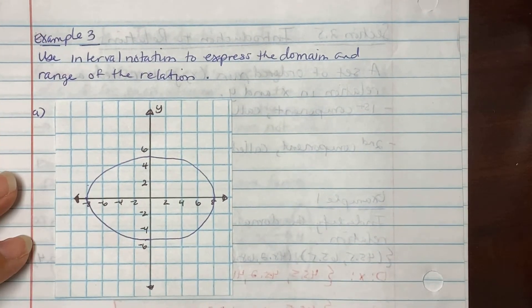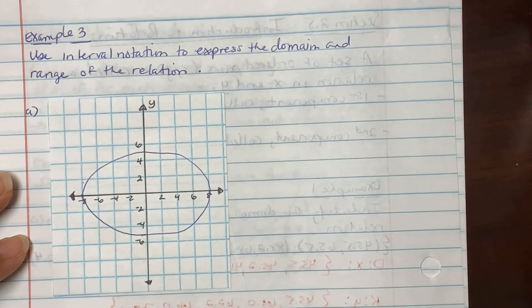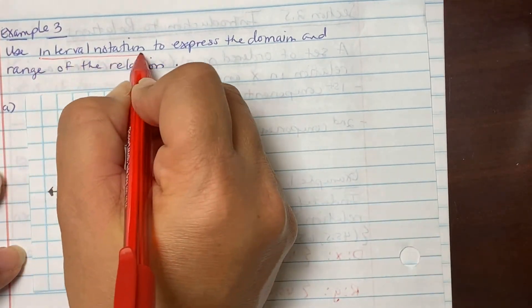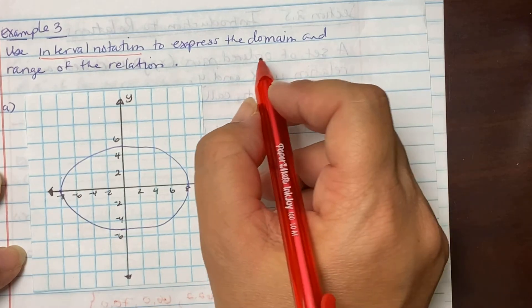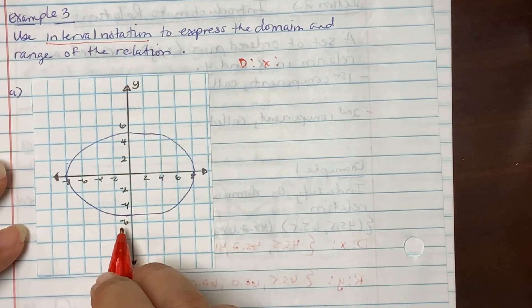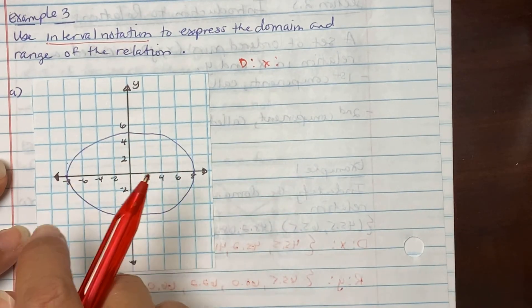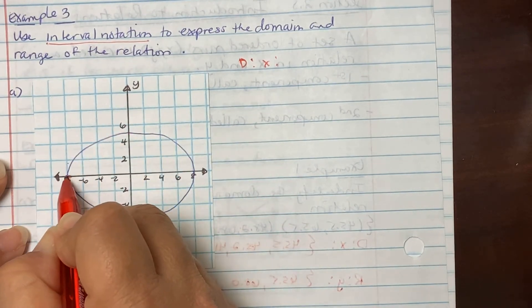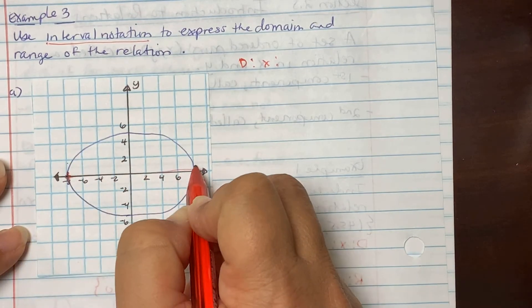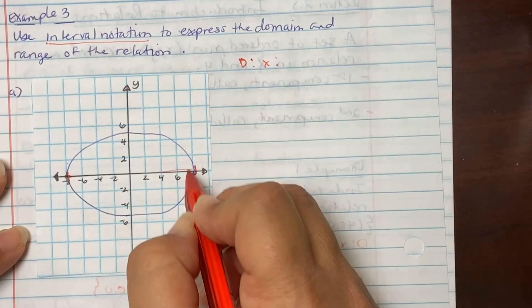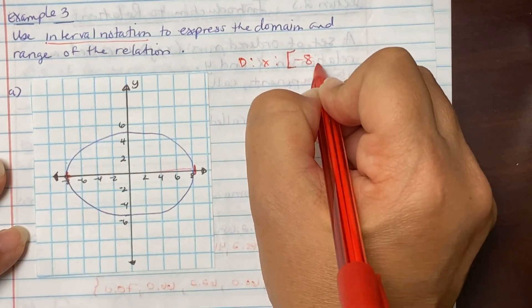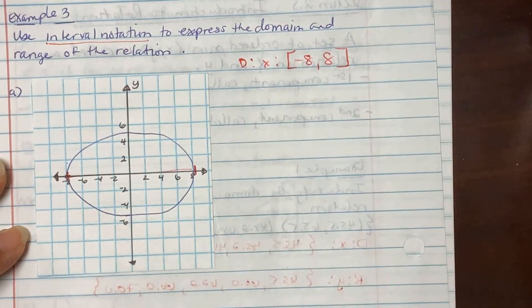On example 3, it says use interval notation to express the domain and range of the relations. Remember, when we're talking about interval notation, it's your boundaries. So domain, those are your x's. We're looking at our graph, and we have an ellipse. Your x's are running on the x-axis from left to right. It's bounded at negative 8 to positive 8. Since it's a solid line, not dashed, you're going bracket [-8, 8].